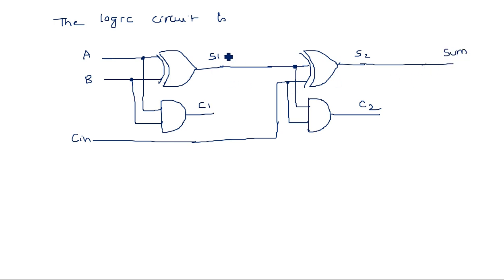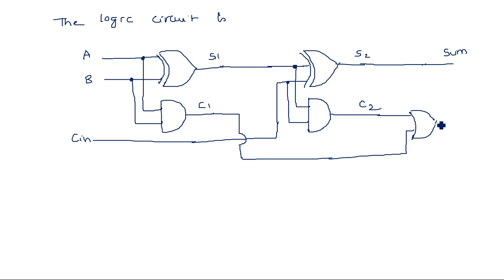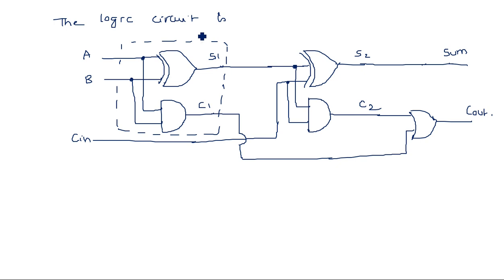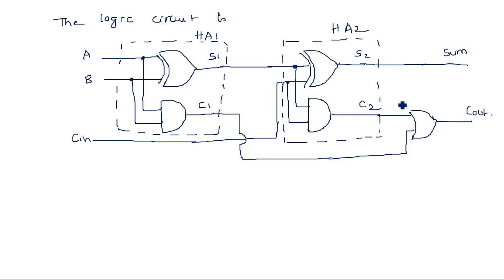Another input from C1 goes into the second half adder, with the other input being the carry-in Cn. The output S2 is the final Sum of the full adder, and the AND gate output is C2. C1 and C2 are OR-ed together to give the total carry-out. So we need two half adders and one OR gate to implement the overall full adder.